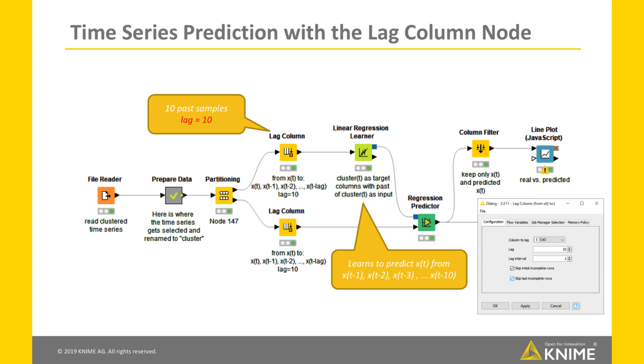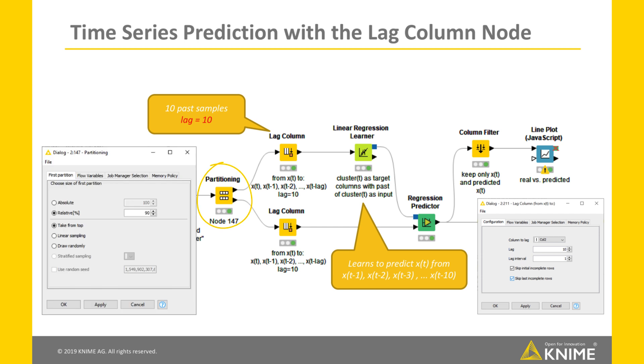Notice that when you train a model to perform time series prediction, you cannot include future items in the training set. In order to avoid this kind of data leakage, if you use the partitioning node, the data extraction strategy cannot be random, but must be set to take from top. In this way, using take from top, only the past samples are included in the training set and only the future samples are included in the test set, given the appropriate time order.